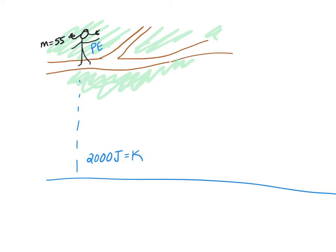Okay, a couple things here. First, of course, we're comparing one object, the girl, in two different positions. So we're going to use our Ki plus Pi plus work is equal to KF plus PF.